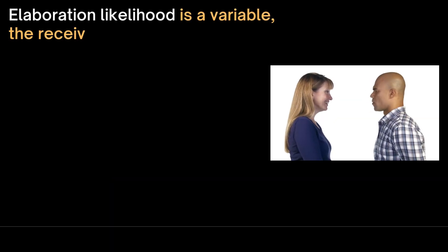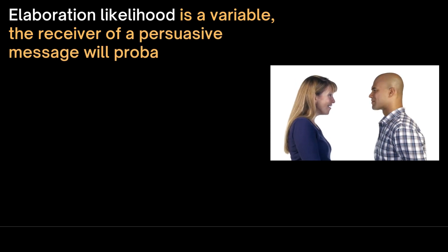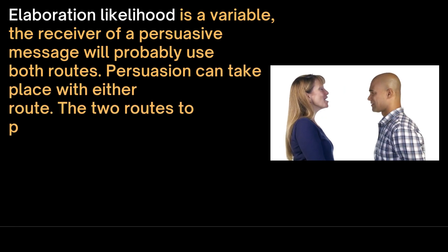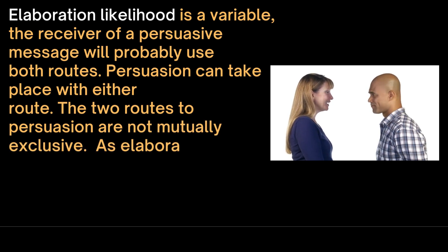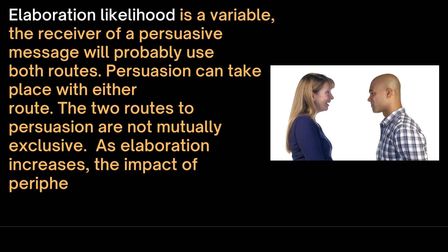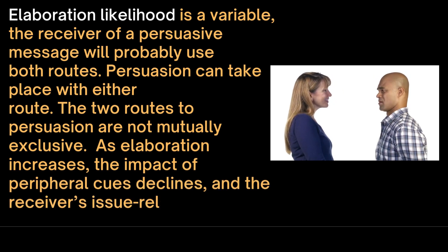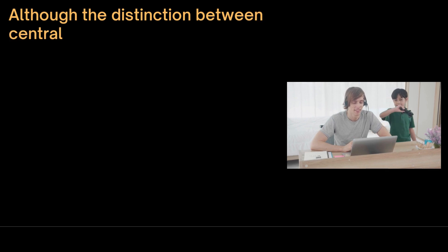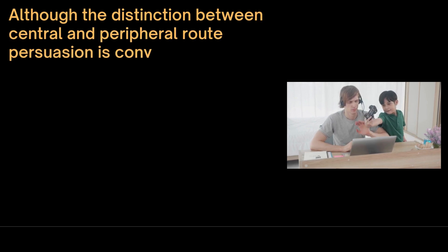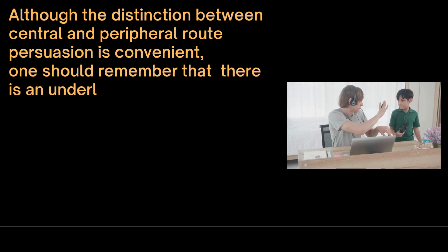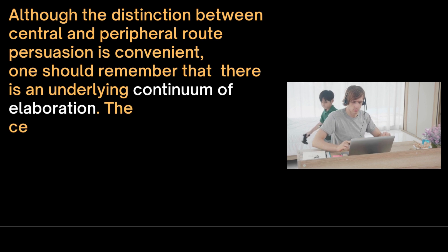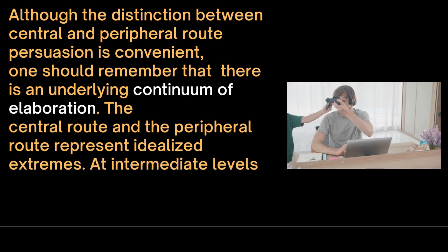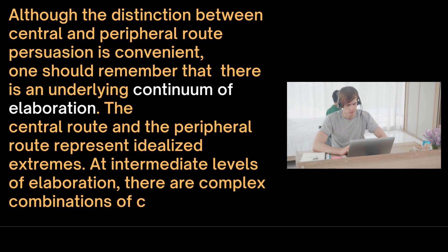Elaboration likelihood is a variable. The receiver of a persuasive message will probably use both routes — persuasion can take place with either route. The two routes to persuasion are not mutually exclusive. As elaboration increases, the impact of peripheral cues declines and the receiver's issue-relevant thinking increases. Although the distinction between the central and peripheral routes is convenient, one should remember that there is actually an underlying continuum of elaboration. The central route and the peripheral route represent idealized extremes, and at intermediate levels there are complex combinations of both.